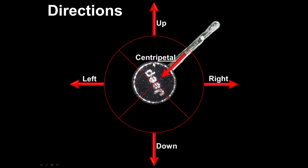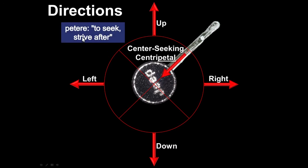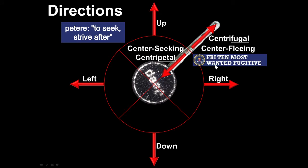Newton came up with these names. The name is centripetal — we can break it down: centripetal means center seeking. The word 'petere' means to seek or to strive after. A force away from the center is called centrifugal, or center fleeing. Think of a fugitive — fugitives flee. So centrifugal names the direction away from the center of a circle.